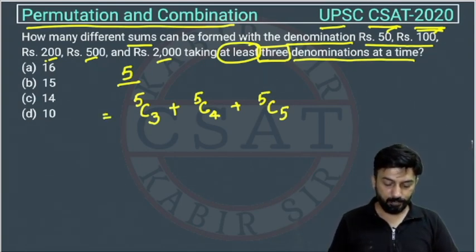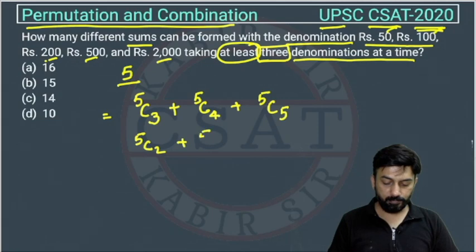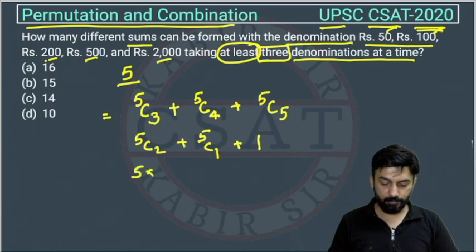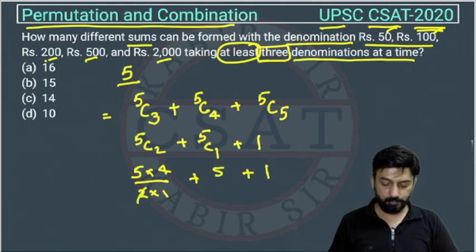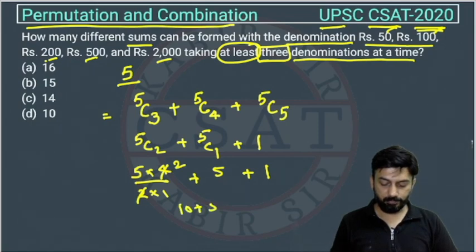So 5C3 can be written as 5C2, and 5C4 can be written as 5C1. And 5C5 will be 1. So this will be 5×4 divided by 2×1, plus 5, plus 1. The 2 will cancel with 4 giving 2 times, so this will be 5×2 = 10, plus 5, plus 1. Total is 16.